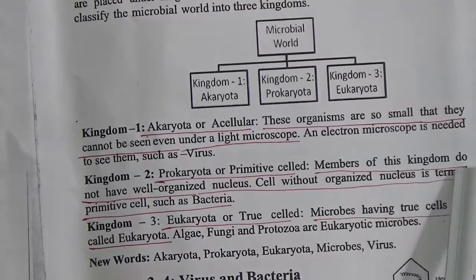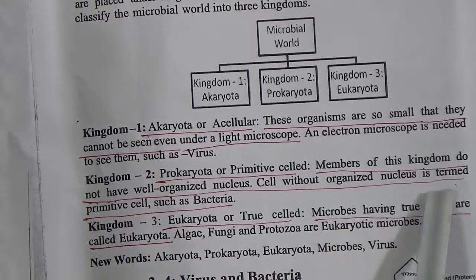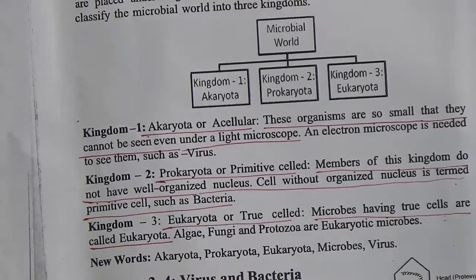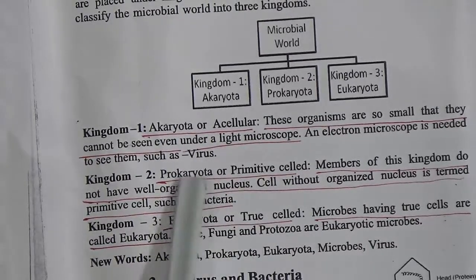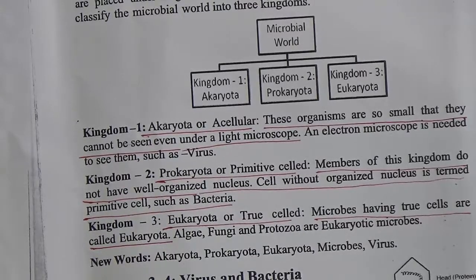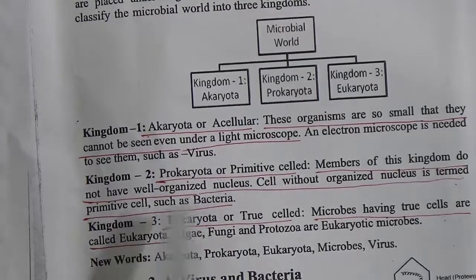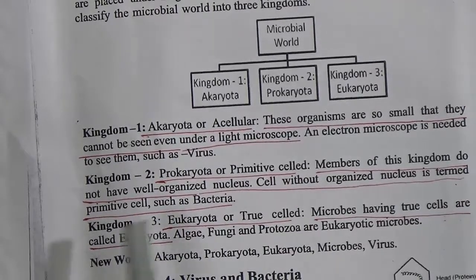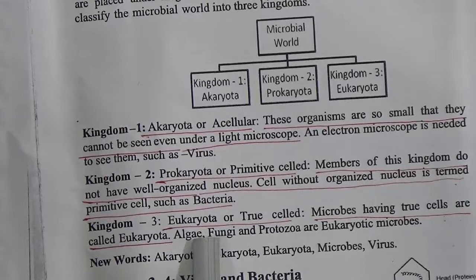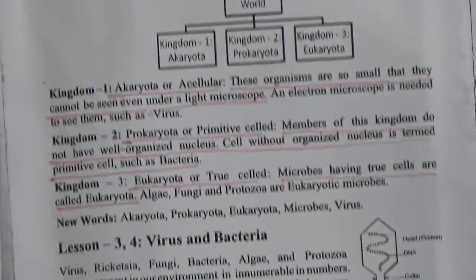Kingdom number two, Prokaryota or primitive cells: members of this kingdom do not have a well-organized nucleus. A cell without an organized nucleus is termed a primitive cell — such as bacteria. Kingdom number three, Eukaryota or true cells: microbes having true cells are called Eukaryota. Algae, fungi, and protozoa are eukaryotic microbes.